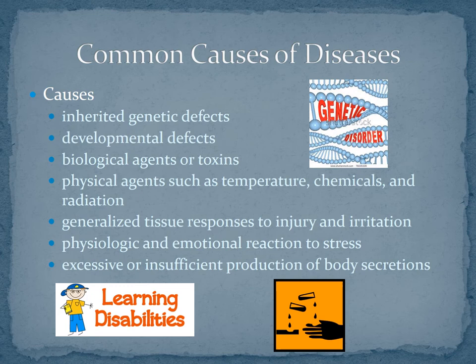There can be a variety of causes for disease: inherited genetic defects, developmental defects, biological agents or toxins, physical agents such as a change in temperature, chemicals or radiation, irritation, and generalized tissue responses to injury. Physiologic and emotional reactions to stress can cause disease. When you have a lot of emotional stress, your body reacts negatively — some people get diarrhea, severe headaches, or feel extremely depressed. So emotional health is also very important. Excessive or insufficient production of body secretions can also cause disease.